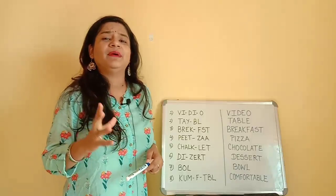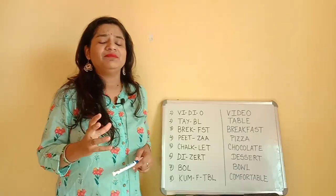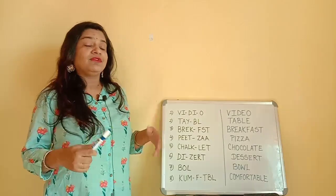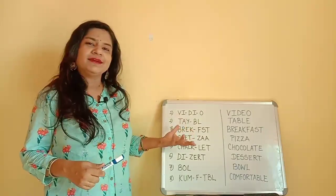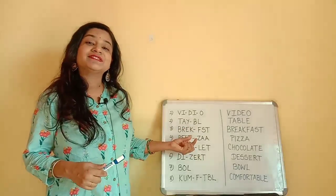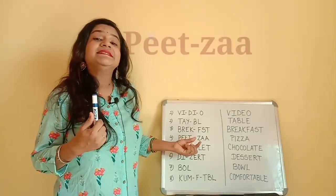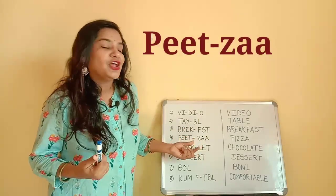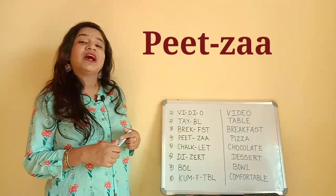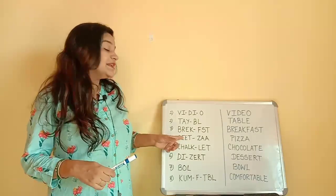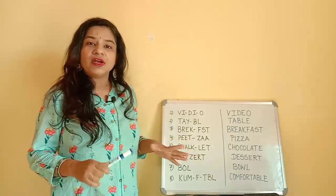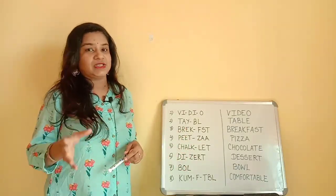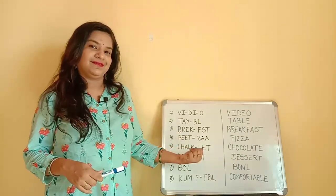This particular dish is liked by children very much, it's very yummy — we often order it. What is this word called? It is called 'pizza'. You have to have a sound of T in that — 'pizza'. It is not 'pizza', it is not 'pija', it is 'pizza'.